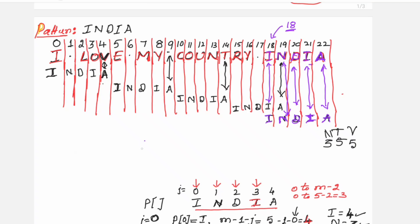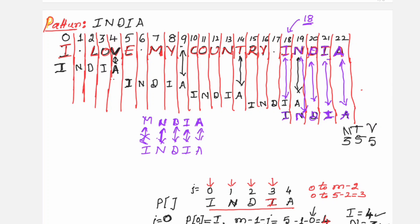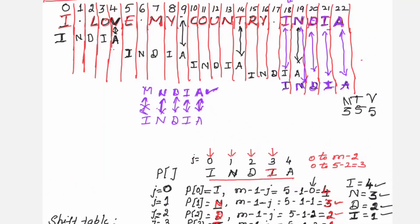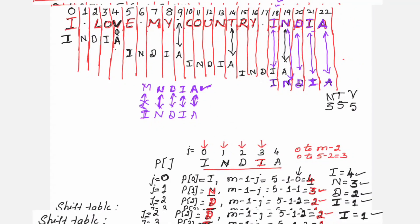Suppose a partial match occurs — say the first four characters match from the right but the fifth does not. Then you check only the first (leftmost aligned) character in the text at that position, look up its value in the shift table, and shift the pattern by that many positions. This determines how far to advance for the next comparison.